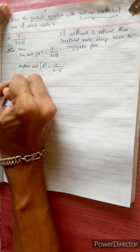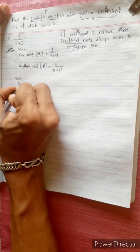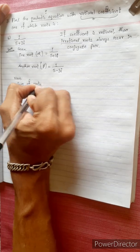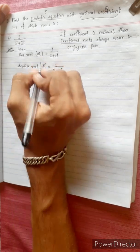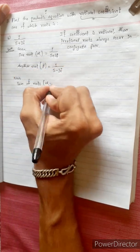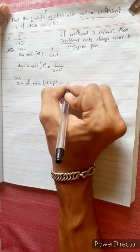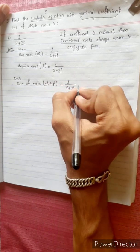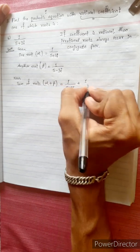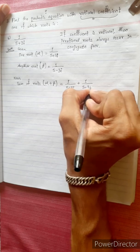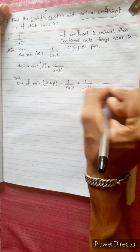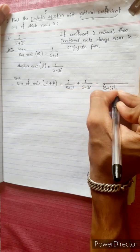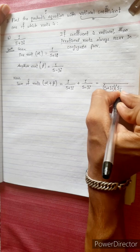Now, sum of roots: alpha plus beta equals 1/(5+3i) plus 1/(5-3i). Taking LCM: (5+3i)(5-3i) in the denominator. The numerator becomes (5-3i) plus (5+3i).